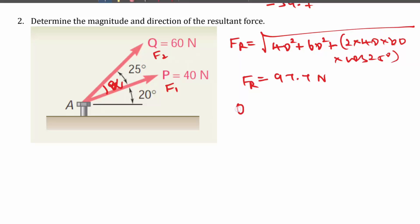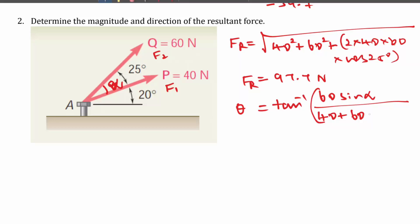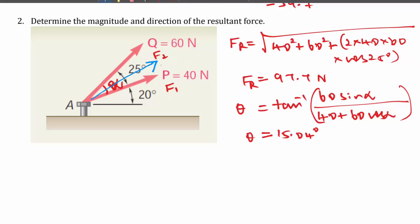Next, let us calculate the direction theta. θ = tan⁻¹(F2·sin α / (F1 + F2·cos α)) = tan⁻¹(60·sin 25° / (40 + 60·cos 25°)). Solving this, we get θ ≈ 15.04°. So the resultant FR = 97.7 N acts with an inclination from F1 of 15.04°.